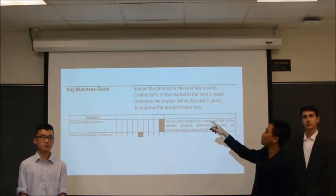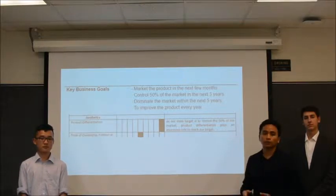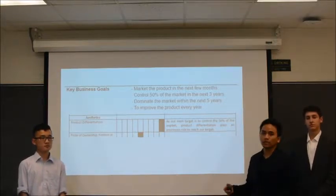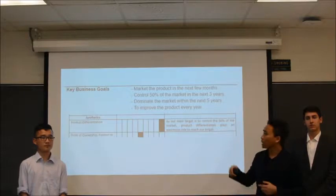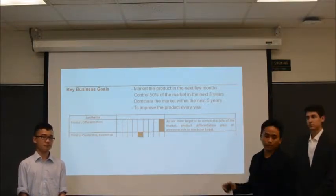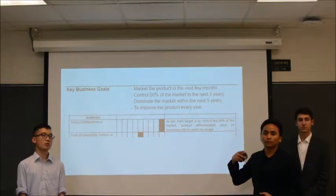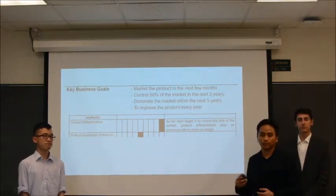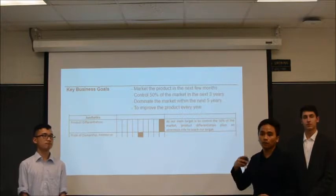In order to achieve control of 50% of the market in the next three years, dominate the market within the next five years, and to improve the product every year, we have to sell as many of our product as we can. To achieve this, we have to make our product different from the competitors. So our key business goal is directly related to the industrial design, where we place huge importance on product differentiation. When our product is more varied than the competitors' product, our product is set apart from the rest, and hopefully we can attract as many potential customers as we can. On top of that, we try to decrease the cost of the product so that more people can buy it.